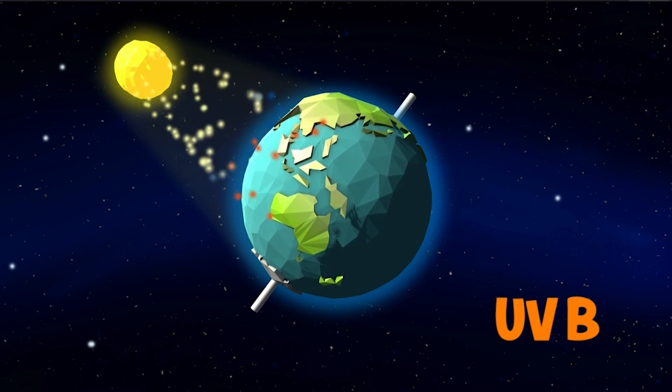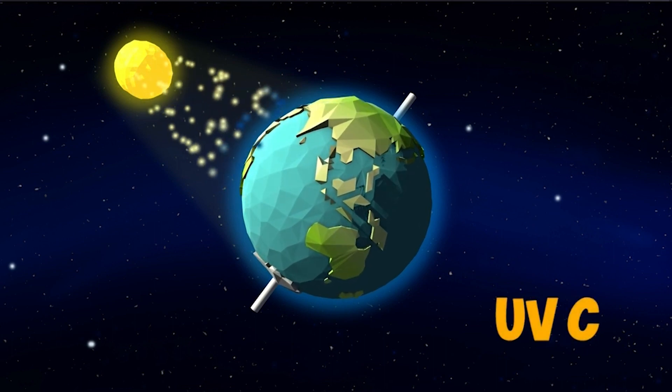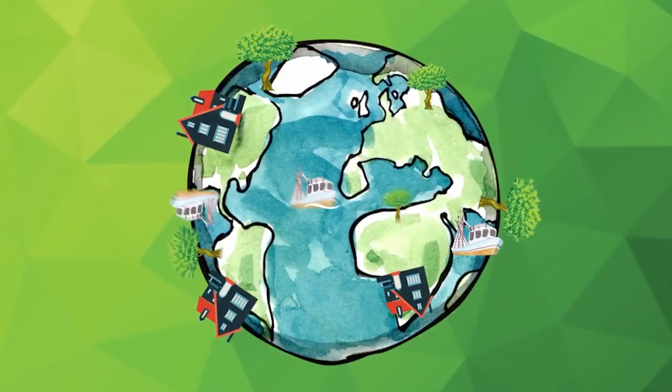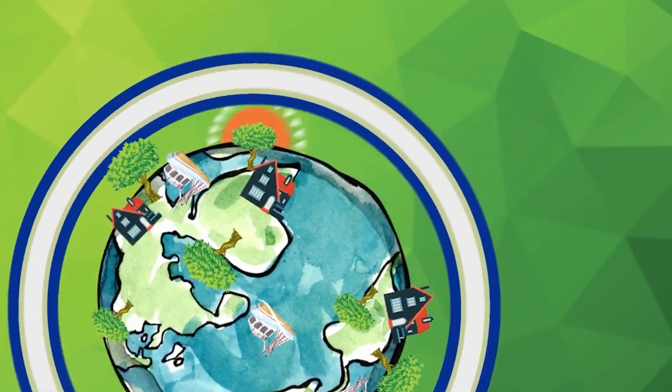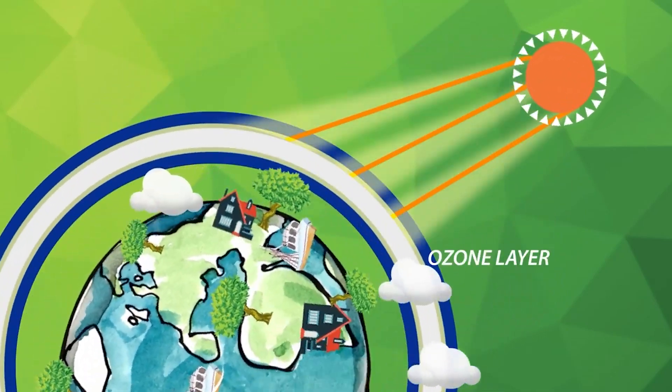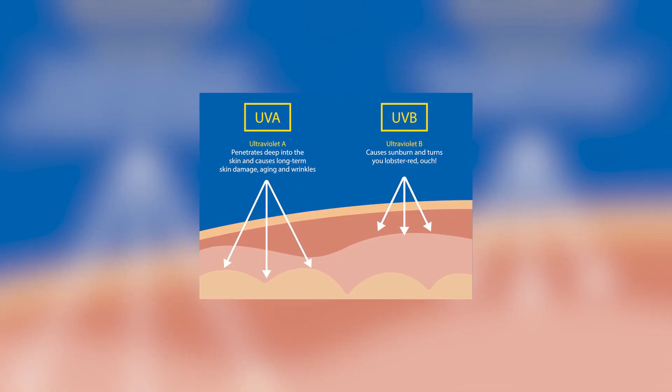UV radiation is actually a spectrum of light — a form of light that we can't see with our eyes. These UV rays generally come from the sun and are broken down into three types: UVA, UVB, and UVC. We won't talk about UVC because it doesn't actually reach Earth — it's filtered by the ozone layer — unless you're an astronaut.